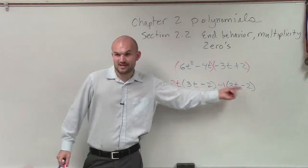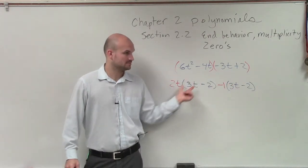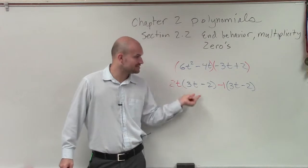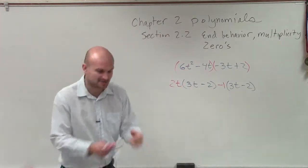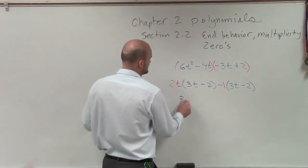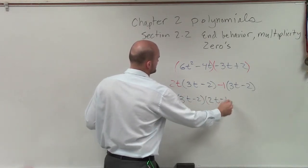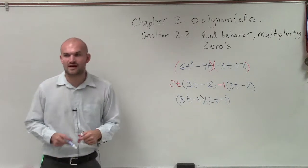You can see how these are now the same, right? That's good. Because now, out of this expression, these two are both the same. So what I can do is now factor that out again. So when I factor out a 3t minus 2, I'm left with a 2t minus 1. And that would be your factored form for that.